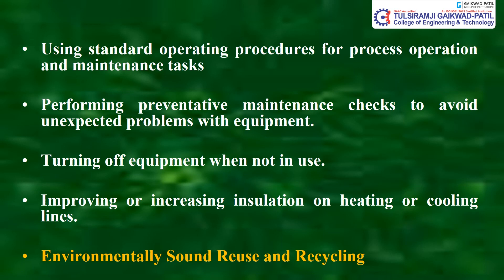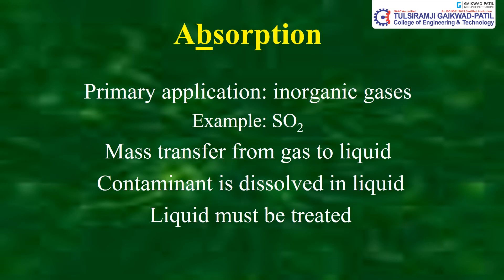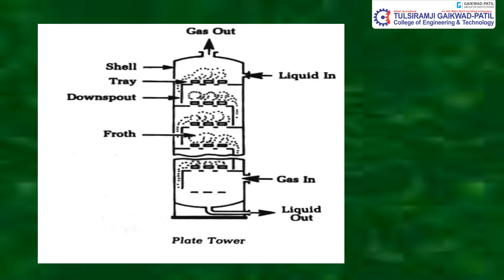For control of gaseous pollutants, methods include absorption, adsorption, and oxidation. Absorption involves mass transfer from gas to liquid — the contaminant dissolves in liquid, which must then be treated. Primary application is for gases like SO2. A plate tower separates gas and liquid from the top and bottom respectively. A packed tower uses liquid in, passing through packing, a liquid redistributor, and packing supports, before gas in and liquid out.